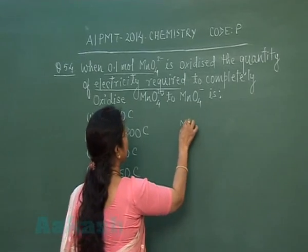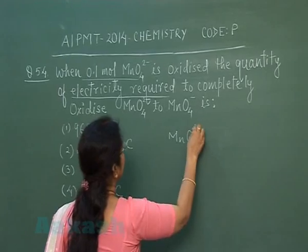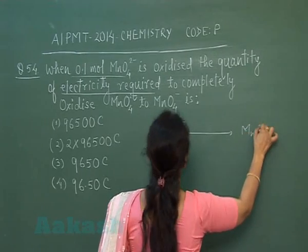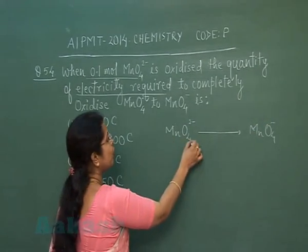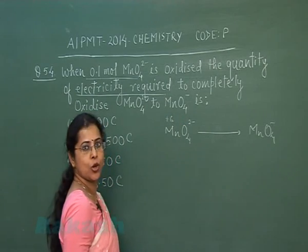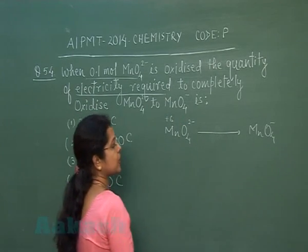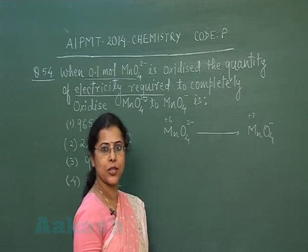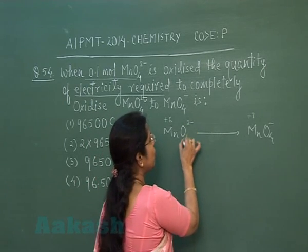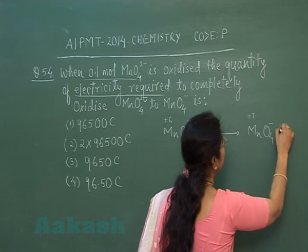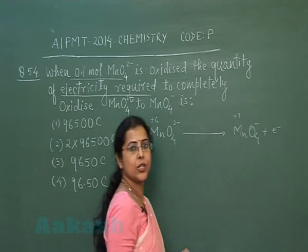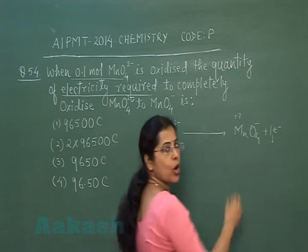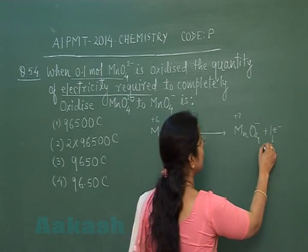In this question, MnO₄²⁻ (permanganate ion) is oxidized to MnO₄⁻. In MnO₄²⁻ the oxidation state of manganese is +6, while in MnO₄⁻ it is +7. So 1 mole of MnO₄²⁻ when completely oxidized releases 1 mole of electrons, and the charge carried by 1 mole of electrons is 96500 coulombs.